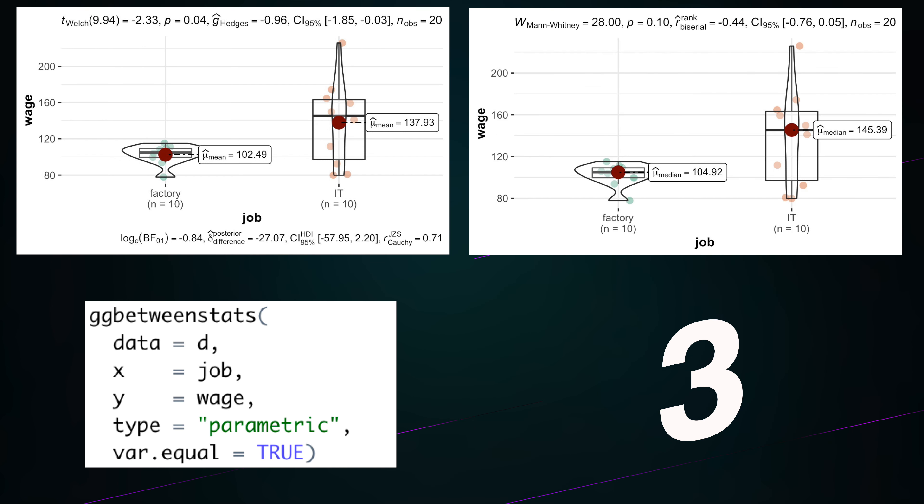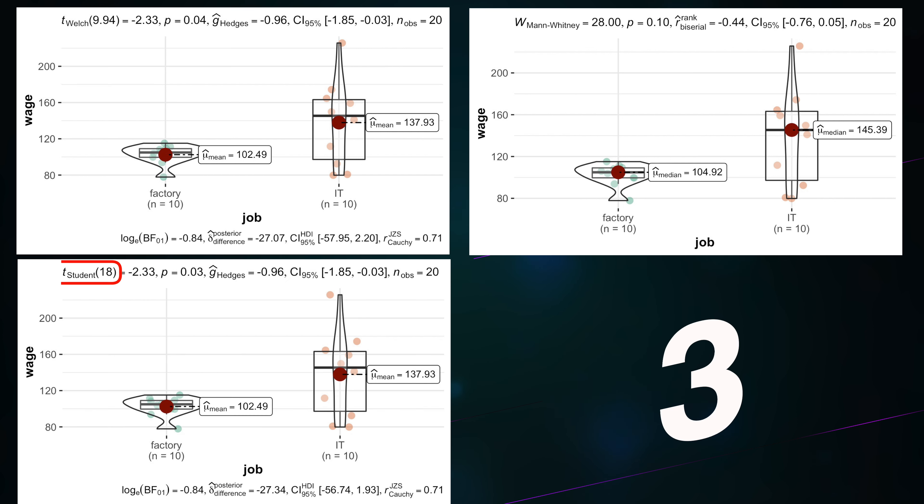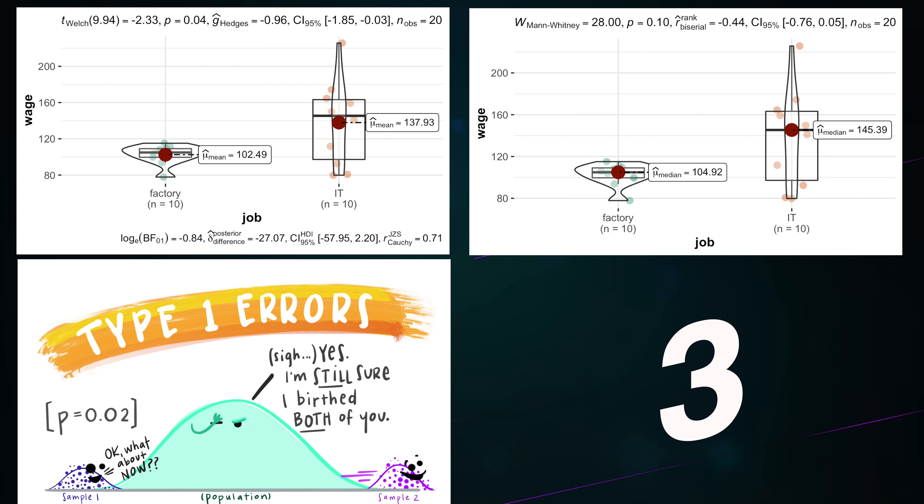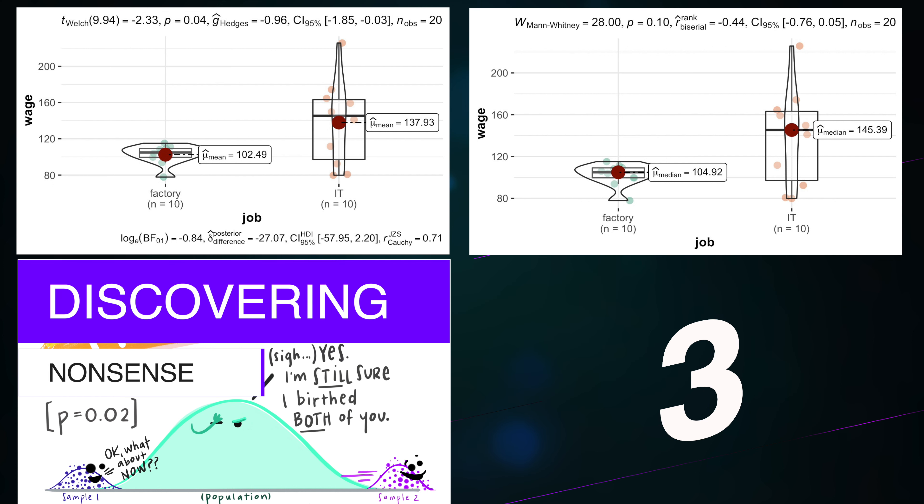Secondly, if we are lazy to check the similarity of variances, we'll go straight to the classic student's t-test, which assumes equal variance, and produces smaller-than-real p-value, indicating more evidence for the difference than necessary. Such mistake is called type 1 error, or simply discovering nonsense.